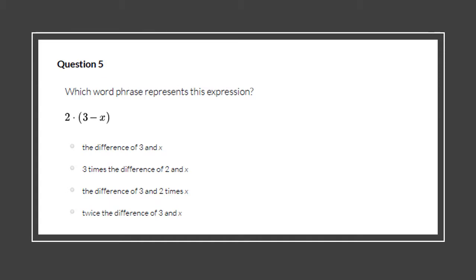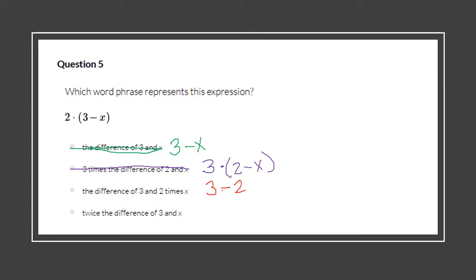Which word phrase represents this expression: 2 times the quantity of (3 − x)? The first option, 'the difference of 3 and x,' if I wrote that out it wouldn't match our expression, so that's not it. The next one, 'three times the difference of 2 and x,' is close but not quite the same thing we have, so that's not our option. The next one, 'the difference of 3 and 2 times x,' is not quite it either.